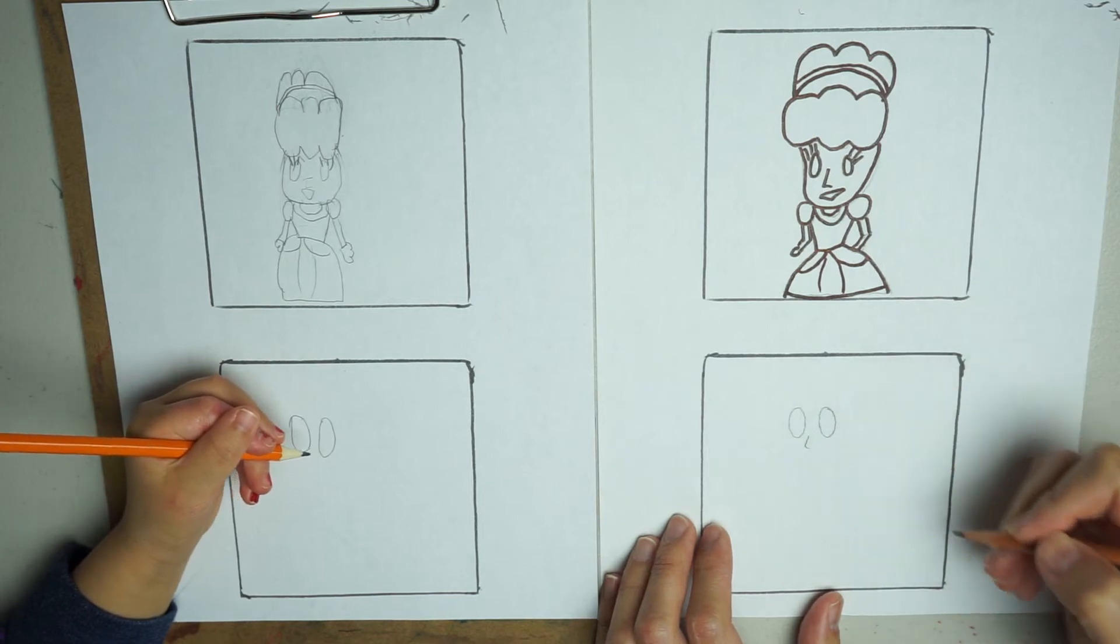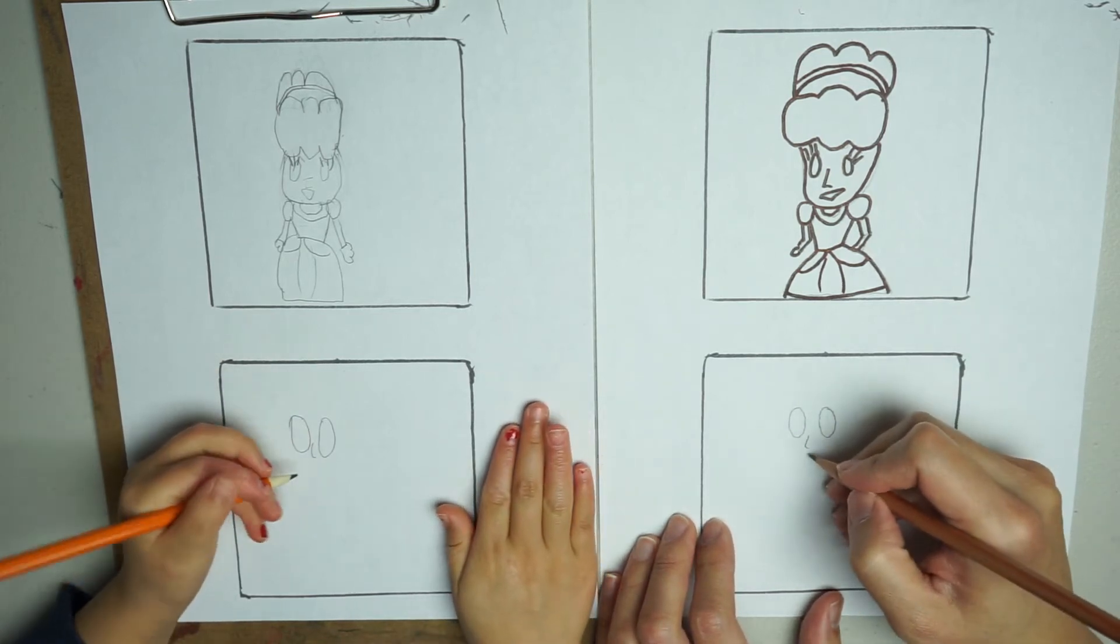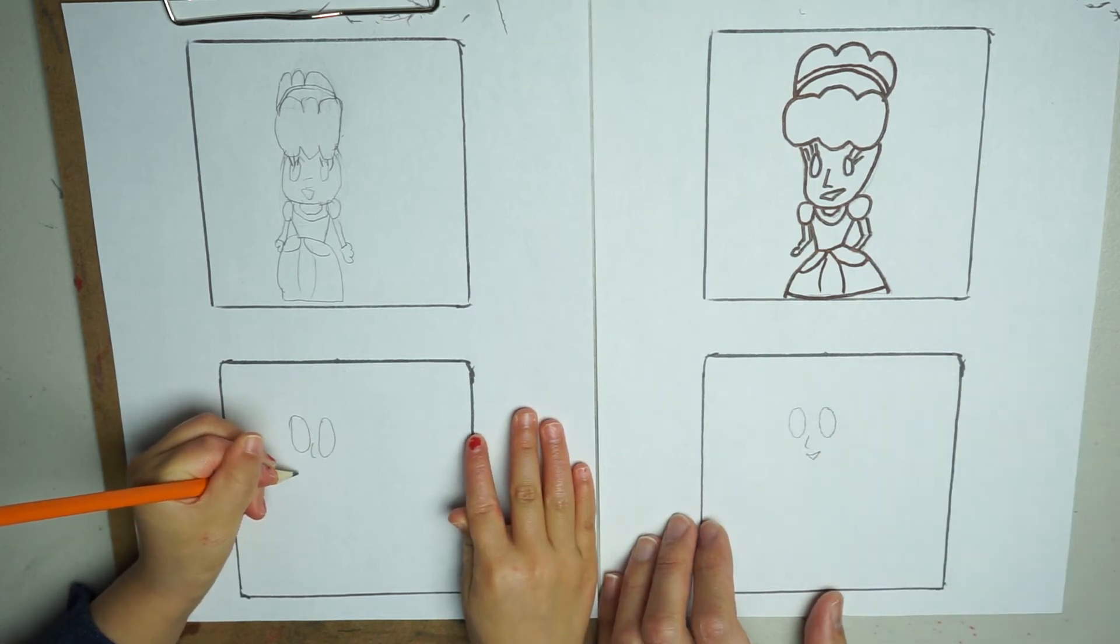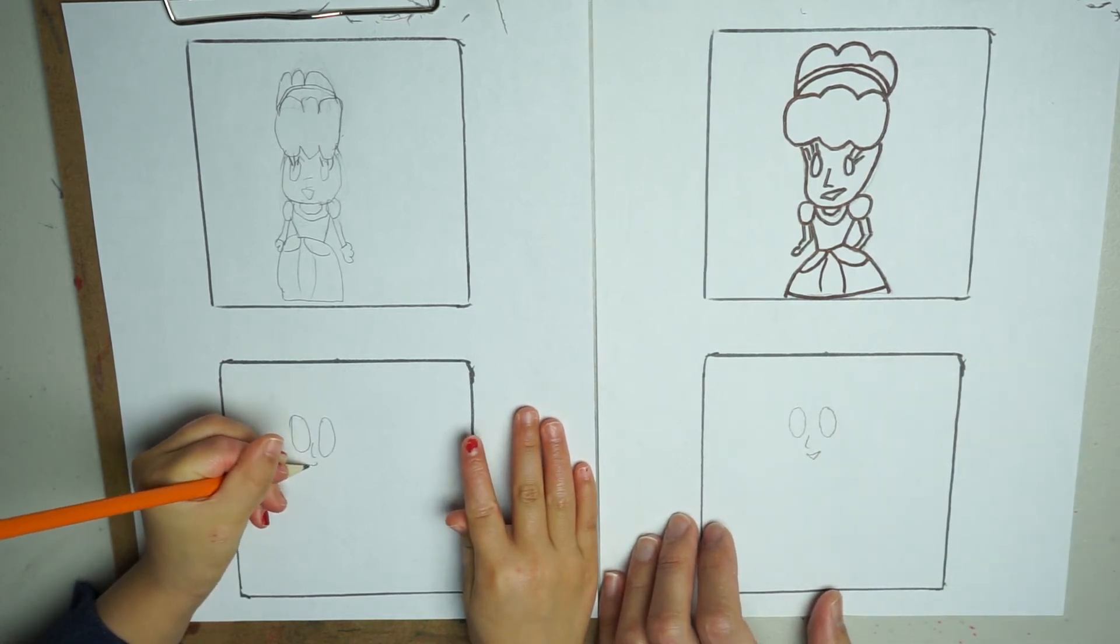Can you put your arm down? And her mouth is a little bit smaller. Smile. Triangle. Okay.